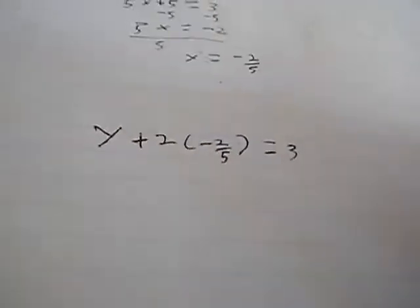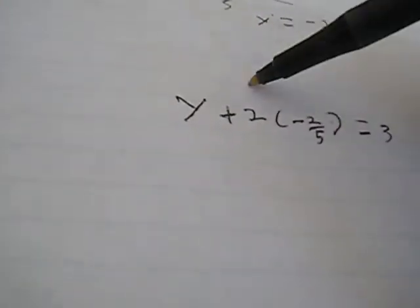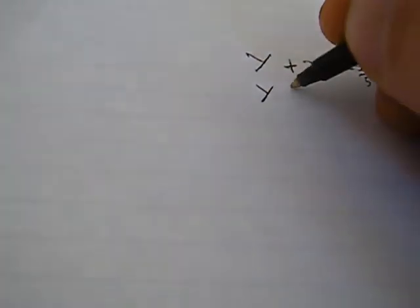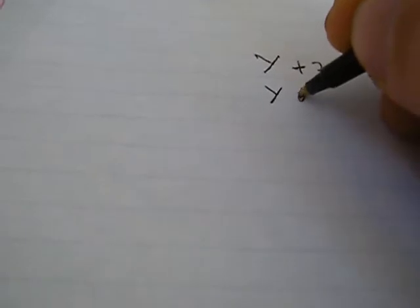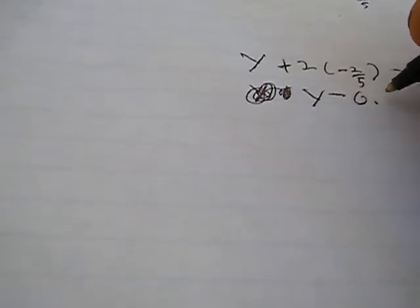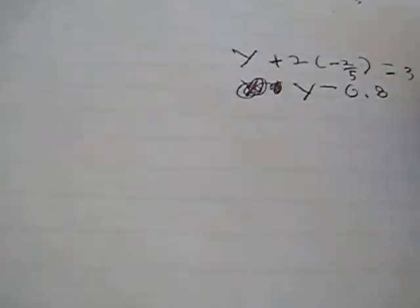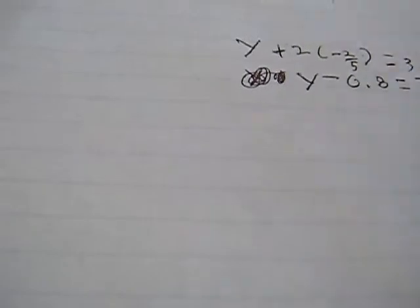So now we will multiply 2 times negative 2 fifths and we will get y minus 0.8 is equal to 3.